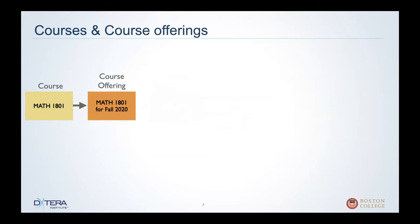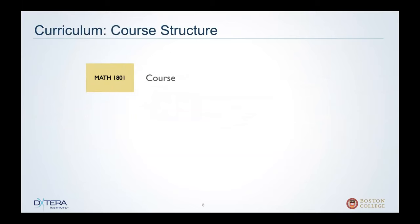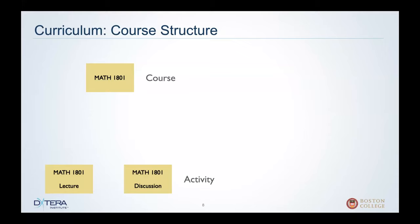That may also percolate over to my program entry in the academic record service for things like how many credits have I attempted this term, what are the total number of credits I've earned, and eventually my GPA calculation. But today we're just going to focus on course and course offering. So let's start with course. Let's say that I'm defining a course and I know that I want to have a couple of pieces: there's going to be a lecture and there's going to be a discussion group. We call these activities — they basically describe the different kinds of activities from a curricular standpoint occurring in this course.